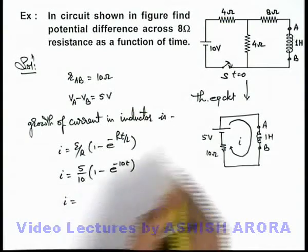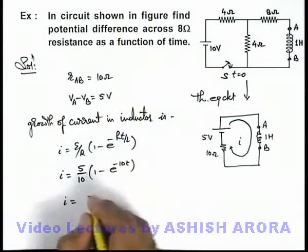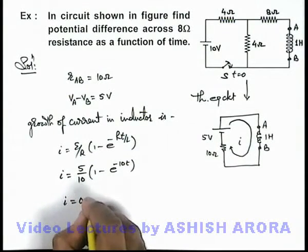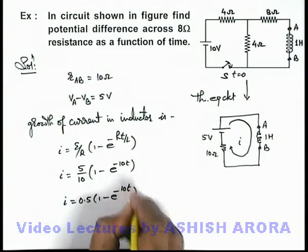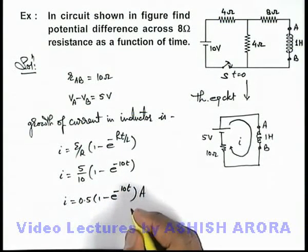So the value of current in this circuit or current passing through inductor we can write as 0.5 (1 - e^(-10t)). This we are getting in ampere.